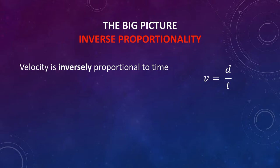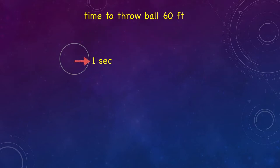Velocity is inversely proportional to time. Velocity is in the numerator, time is in the denominator. A change in time will cause an opposite change in velocity. So, if the time for throwing the ball 60 feet increases, the speed would decrease.